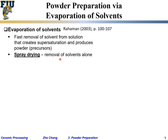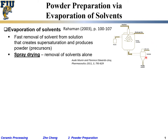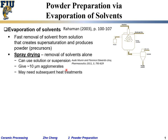Spray drying involves removal of solvents alone with no other chemical reaction. The setup takes a feed flow which is a solution or suspension — powder suspended in liquid — and uses high velocity gas to bring the liquid together and spray it into a big chamber with heat. The heat drives away the solvent, and the gas breaks up the liquid into small droplets.